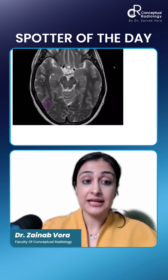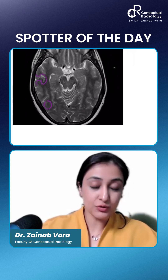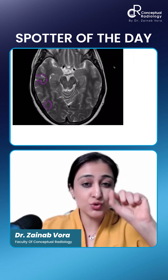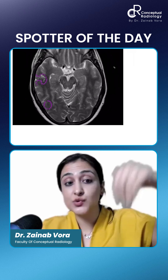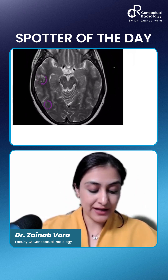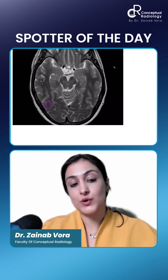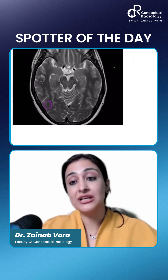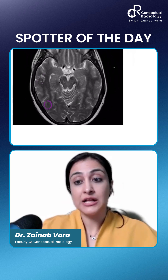MVNT is the one which will go along the gyri and sulci and would be this small serpiginous lesion which would go along. That is the reason why this is MVNT. DNET would be cortical and would expand the cortex.